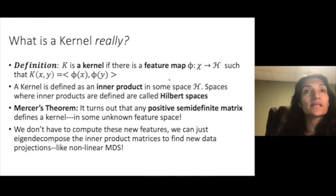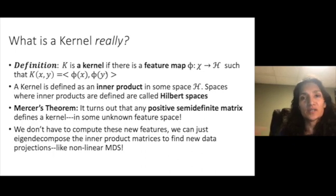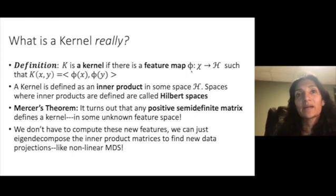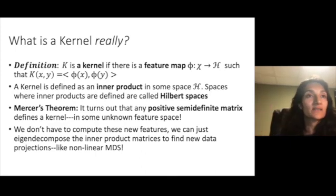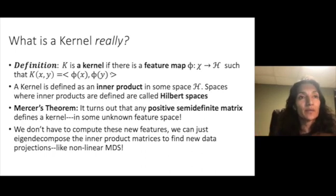A kernel is formally defined as a function that is an inner product in some other feature space. What is this other feature space? Turns out we don't even have to know. It just has to exist a feature map, phi, that goes from the original data space to a Hilbert space, where inner products are defined. And in this new space, this kernel function is simply an inner product.